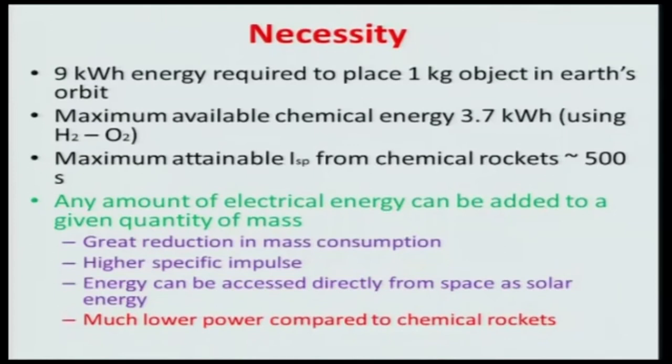However, if you use electrical energy, chemical energy has a limitation: burning 1 kg of propellant produces only a fixed amount of chemical energy depending on its heating value — you cannot produce more than that. Whereas any amount of electrical energy can be added to any given quantity of mass, because electric energy is not related to mass. So to a unit mass, any amount of electrical energy can be imparted. This results in a great reduction in mass consumption — you take a very small amount of mass, energize it to a very high level, moving it at higher velocity, so specific impulse will be more. A high specific impulse is attainable.